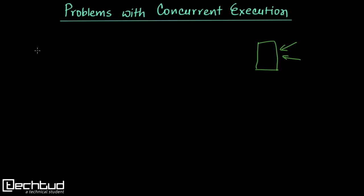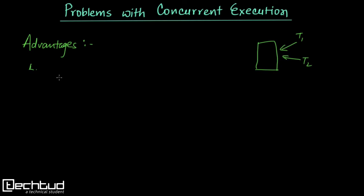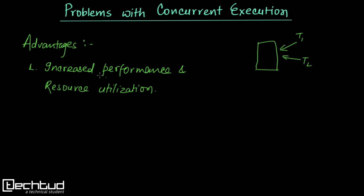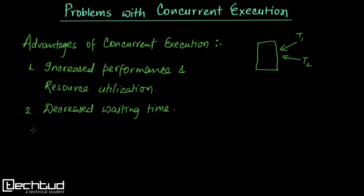First of all we need to understand what are the advantages of concurrency or concurrent execution of transactions. We have multiple transactions executing over the same database and we need to manage them. Concurrent execution has some advantages — mainly two: increased performance and resource utilization, and as a result, the waiting time of processes decreases.